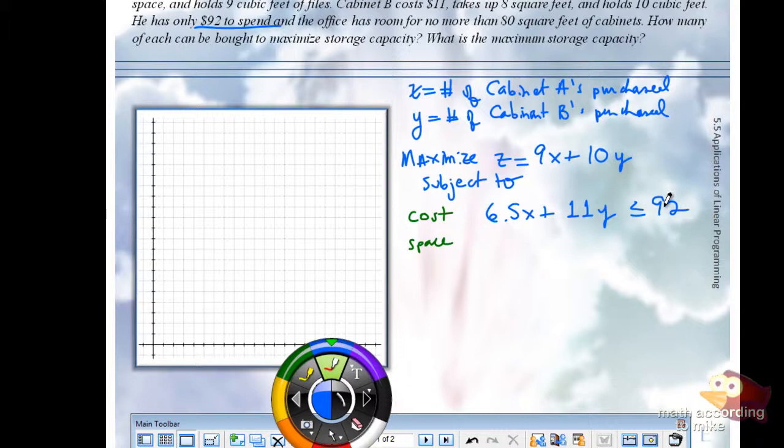Now, let's talk about space. How much space does cabinet A take up? Six. And we have X of those cabinets. Plus, how much space does cabinet B take up? Eight. We have Y, and he has at most eighty square feet.